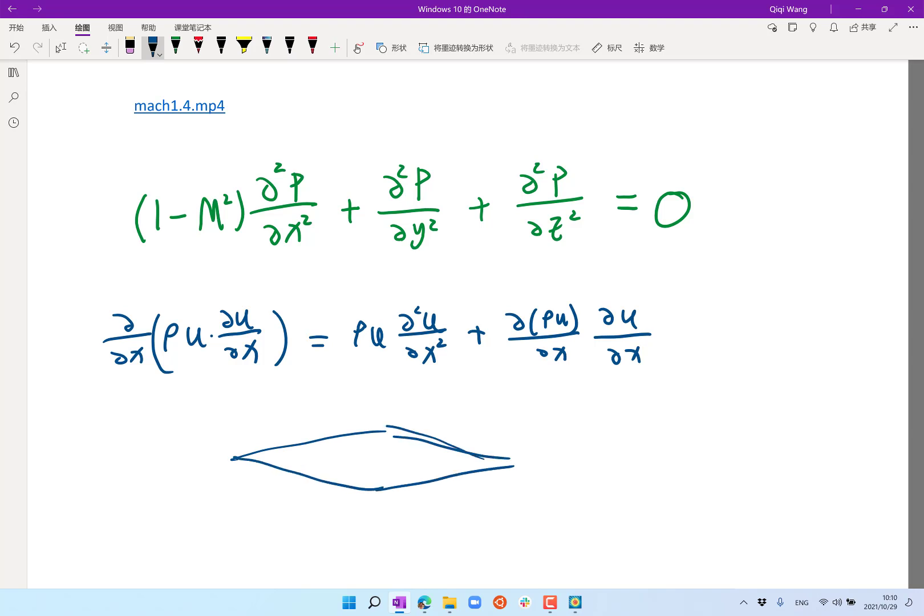So essentially what I'm asking is if the airplane shrinks from a relatively thick airplane to half of the thickness, how much does this term reduce and how much does that term reduce?